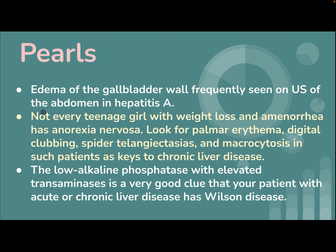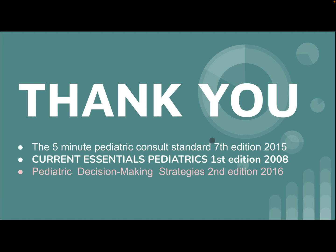Clinical pearls: edema of the gallbladder wall is frequently seen on abdominal ultrasound in hepatitis A. Not every teenage girl with weight loss and amenorrhea has anorexia nervosa — look for palmar erythema, digital clubbing, spider telangiectasia, and macrocytosis as clues to chronic liver disease. A low alkaline phosphatase combined with elevated transaminase is a very good clue that your patient with acute or chronic liver disease also has Wilson disease.